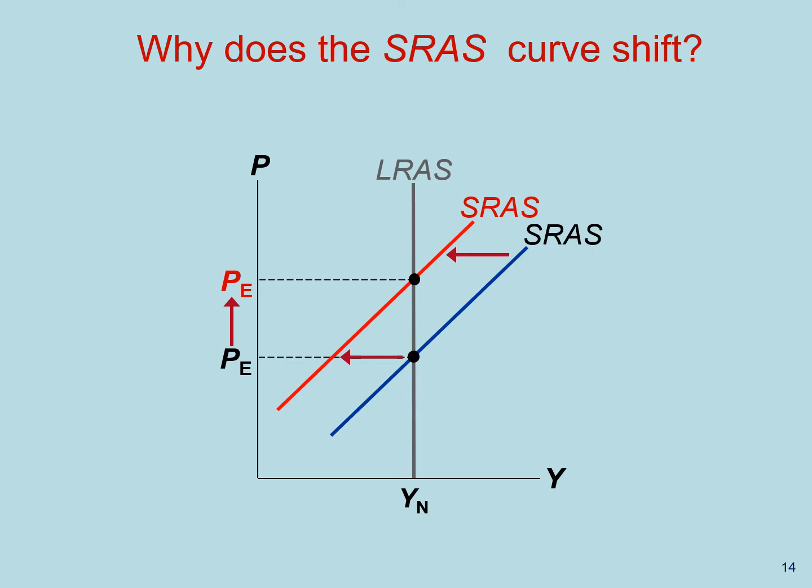In this illustration, if price expectations increase, workers and firms set higher wages at each price level. Production is less profitable, so short run output falls. Short run aggregate supply curve shifts to the left.